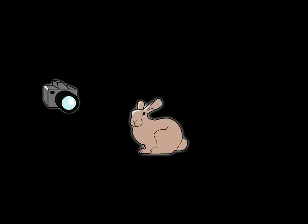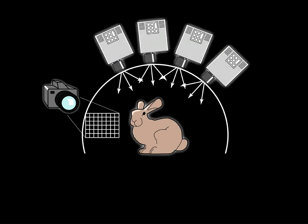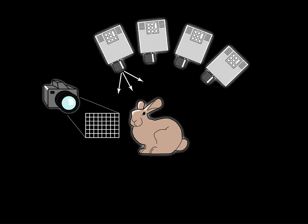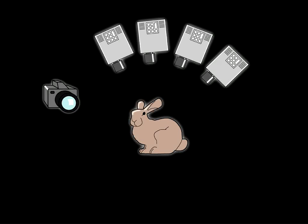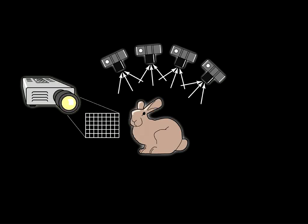One area that has gained interest in the past few years is relighting with 4D incident light fields. To do this, we must capture the six-dimensional reflectance function that relates 4D incident illumination to our 2D output image. Traditionally, this can be done by measuring the transport between a single camera and an array of projectors. Dual photography can accelerate this process tremendously. In our paper, we show that this setup is equivalent to one with a single projector and multiple cameras. Because cameras are passive devices, they can operate in parallel, and thus their transport to the projector can be measured simultaneously.